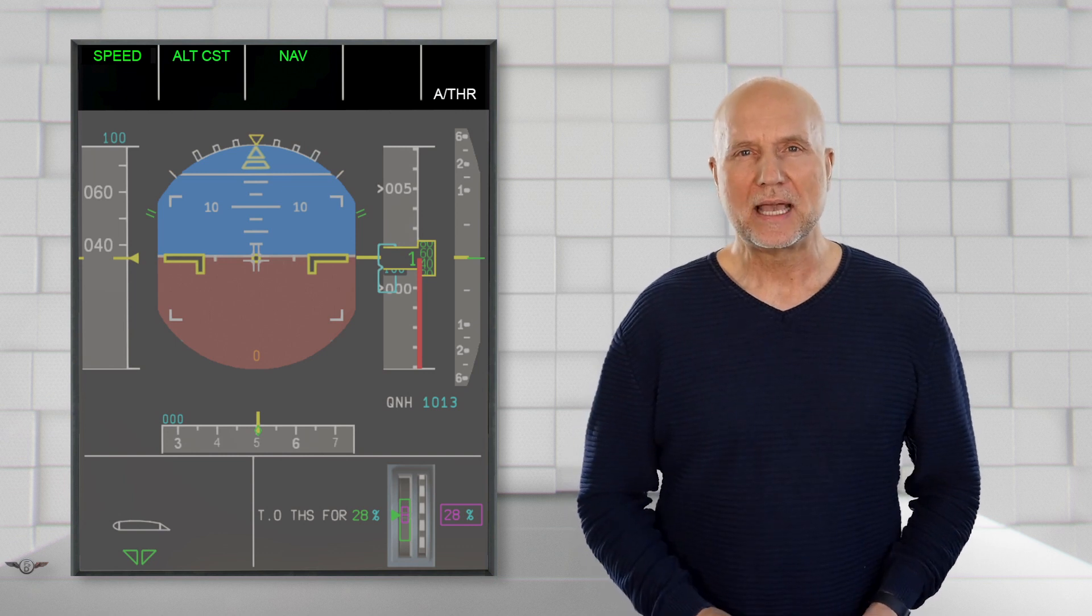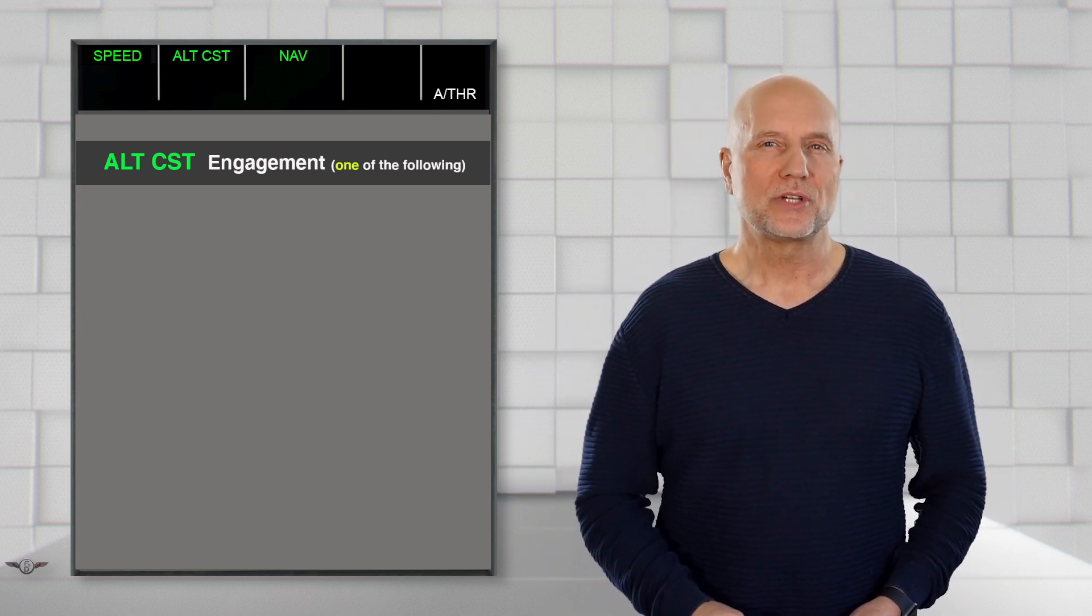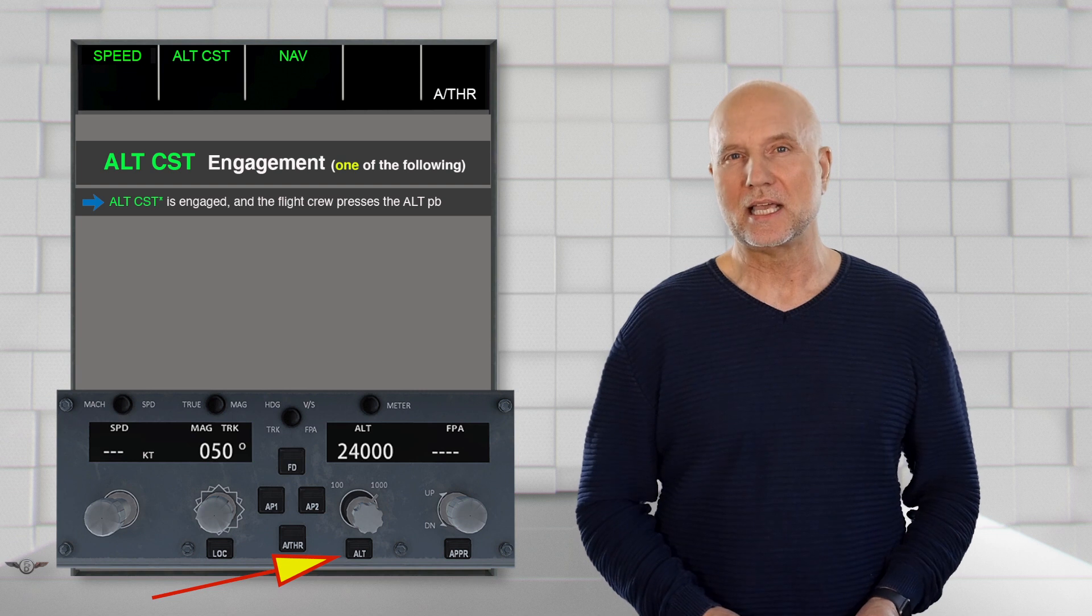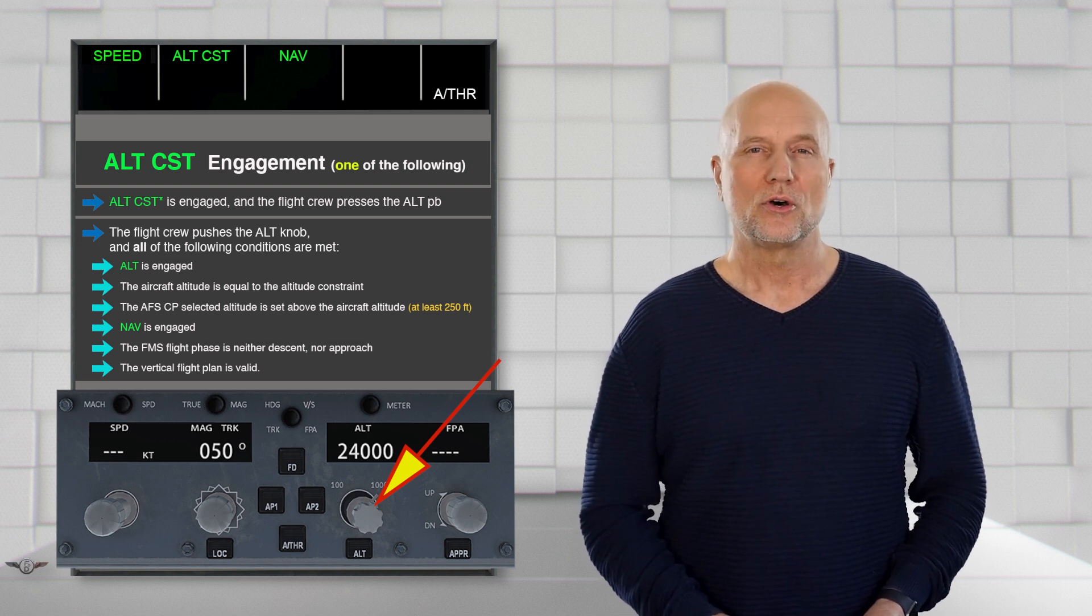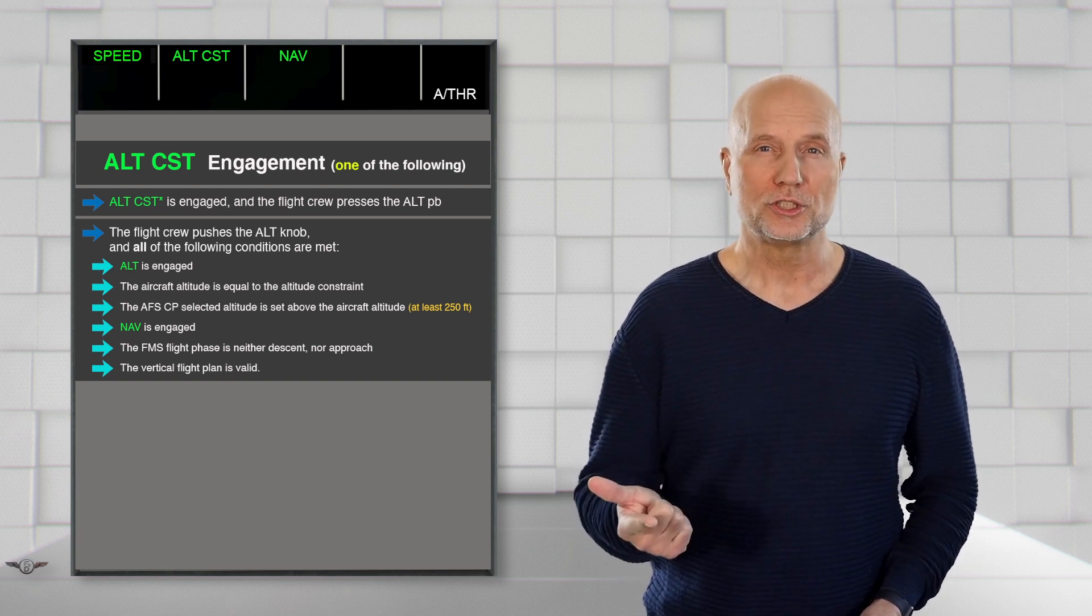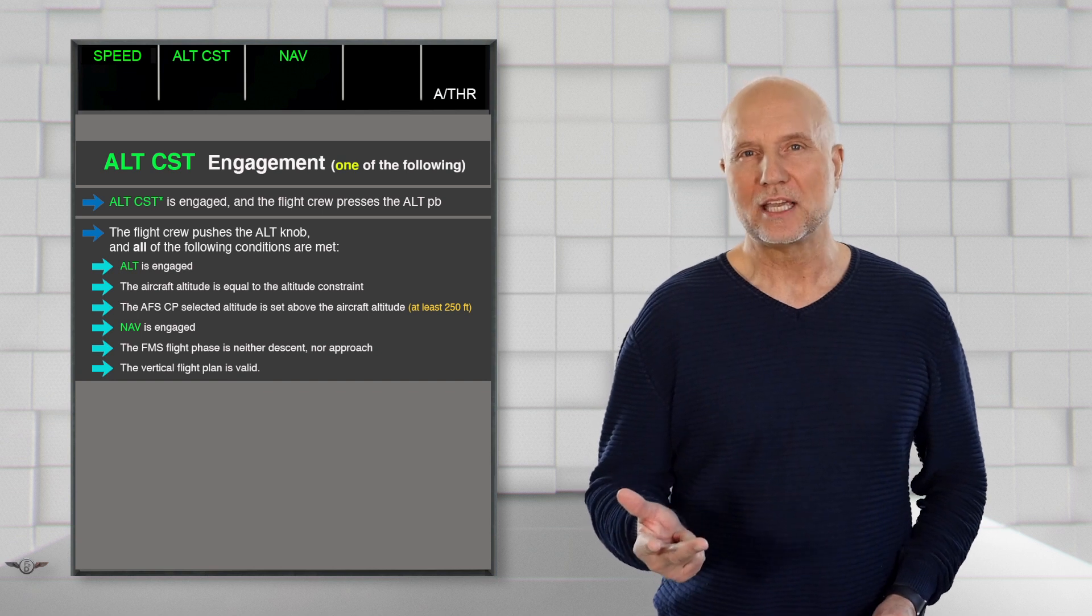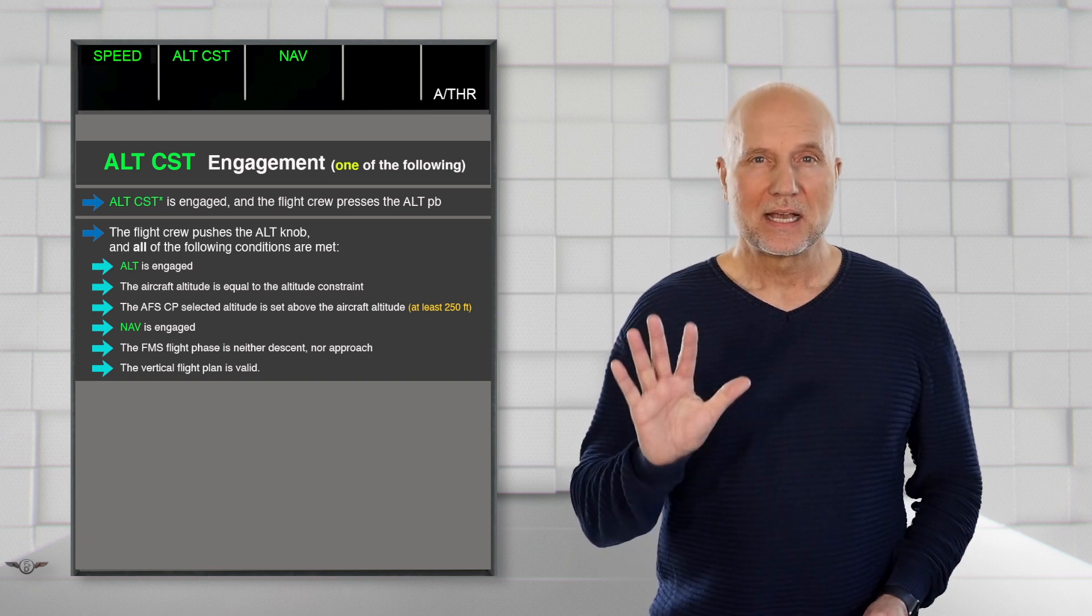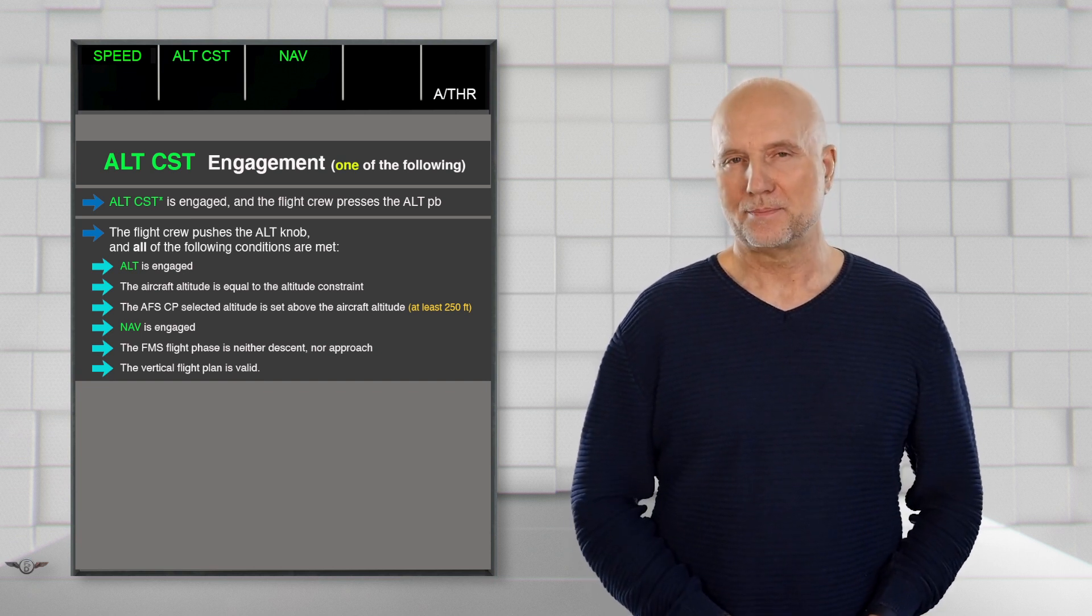Let's have a quick look at the engagement conditions. The first option: ALT Constraint engages if ALT Constraint Star is engaged and as soon as the pilot flying is pressing the Altitude push button on the AFS-CP. Or the second option would be pushing the Altitude selector knob on the AFS-CP, but that will be valid only if Altitude is engaged. The aircraft altitude corresponds to the constraint altitude. The altitude set in the Altitude selector window on the AFS-CP is higher than the present aircraft altitude. Now Altitude is engaged. The FMS flight phase is neither in descent nor in approach, and the vertical flight path is valid.